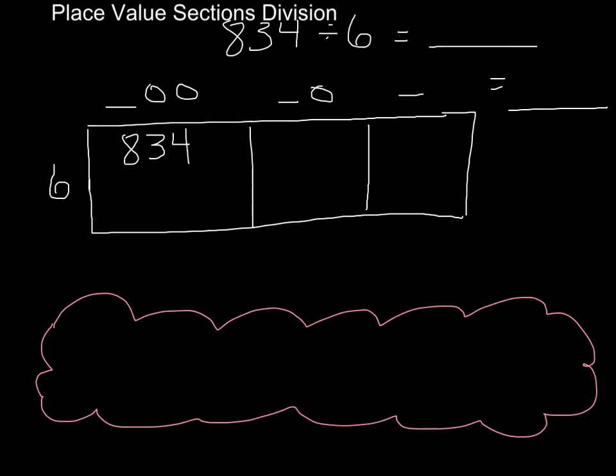Just like in place value sections multiplication, what we've done is we've drawn out a visual that has the sections that are likely to be in the quotient of a number that has a dividend with three digits. 834 is our dividend, and we're going to try to divide that into six different groups.